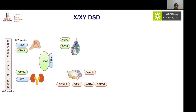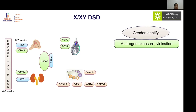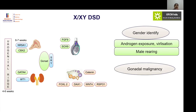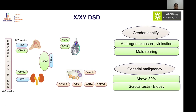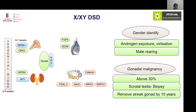In X/XY mixed gonadal dysgenesis, gender identity again depends on androgen exposure and the predominant component — whether X or XY — and most patients identify as male. Gonadal malignancy risk is about 30 percent; even those with scrotal testes should undergo frequent biopsy to assess malignancy risk. Due to X/XY chimerism, these gonads may become streak gonads and have to be removed by around 10 years of age, as risk significantly increases after that.